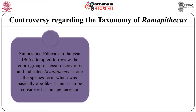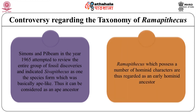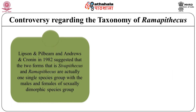They indicated Sivapithecus as one species with a basically ape-like structure, which can be considered an ape ancestor, and the other was Ramapithecus, which possesses a number of hominid characters and was thus regarded as an early hominid ancestor. However, a series of more recent studies cast doubt on this view.